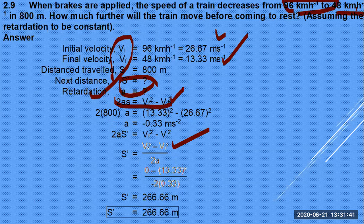After calculating acceleration, use it to find additional distance before the train stops (Vf = 0). Apply S = Vit + ½at² or 2aS = Vf² − Vi² with the computed acceleration. The distance traveled before coming to rest is 266.66 meters.